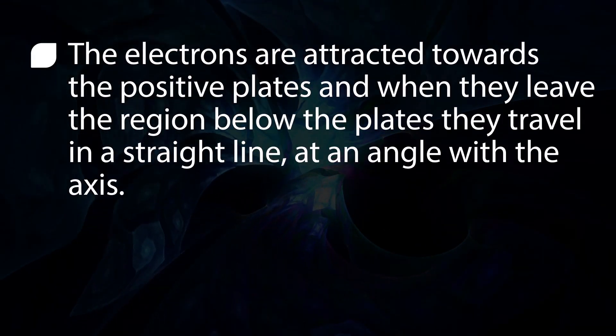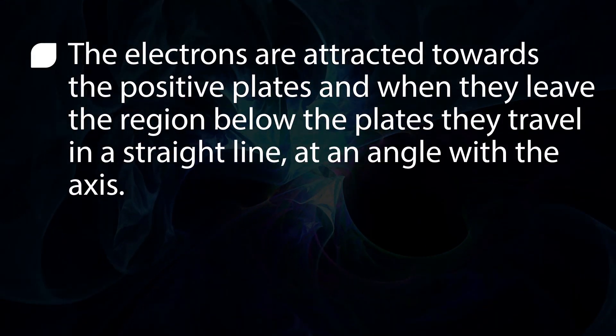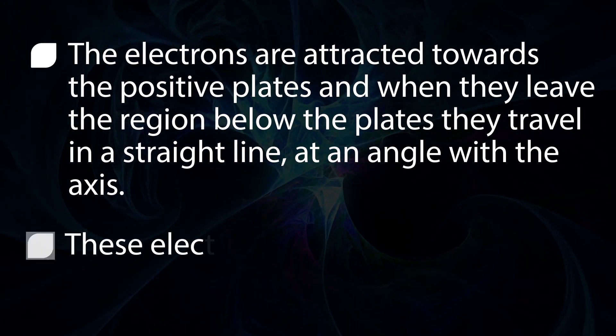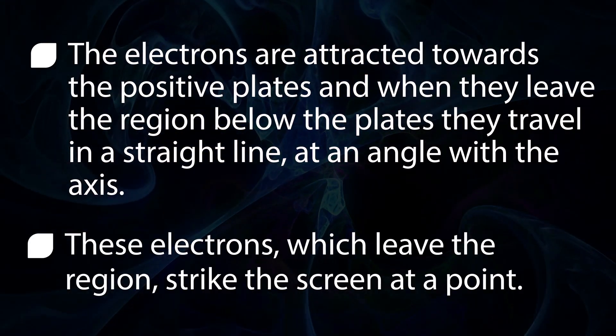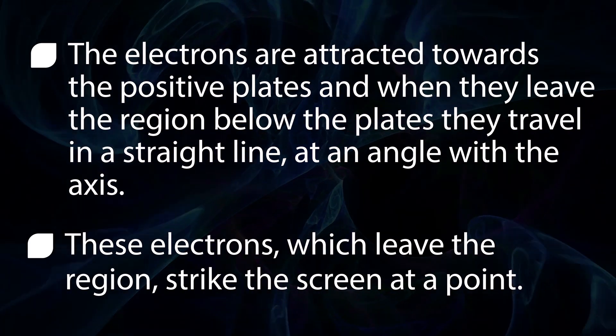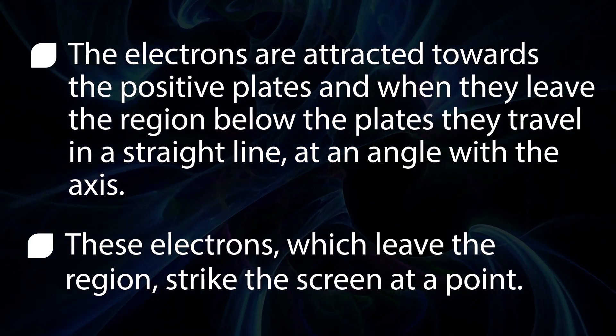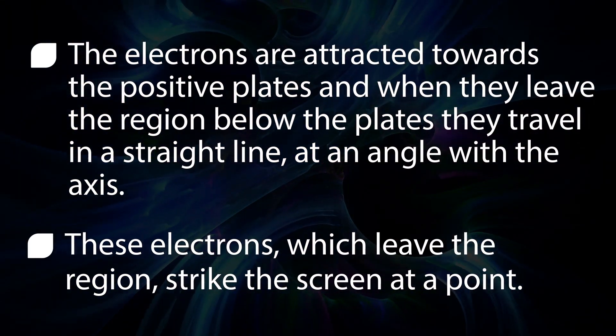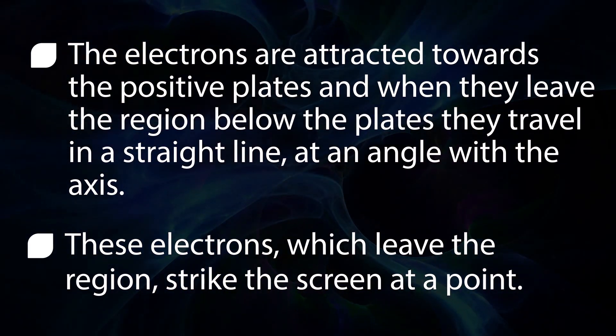The electrons are attracted towards the positive plates and when they leave the region below the plates they travel in a straight line at an angle with the axis. These electrons which leave the region strike the screen at a point.